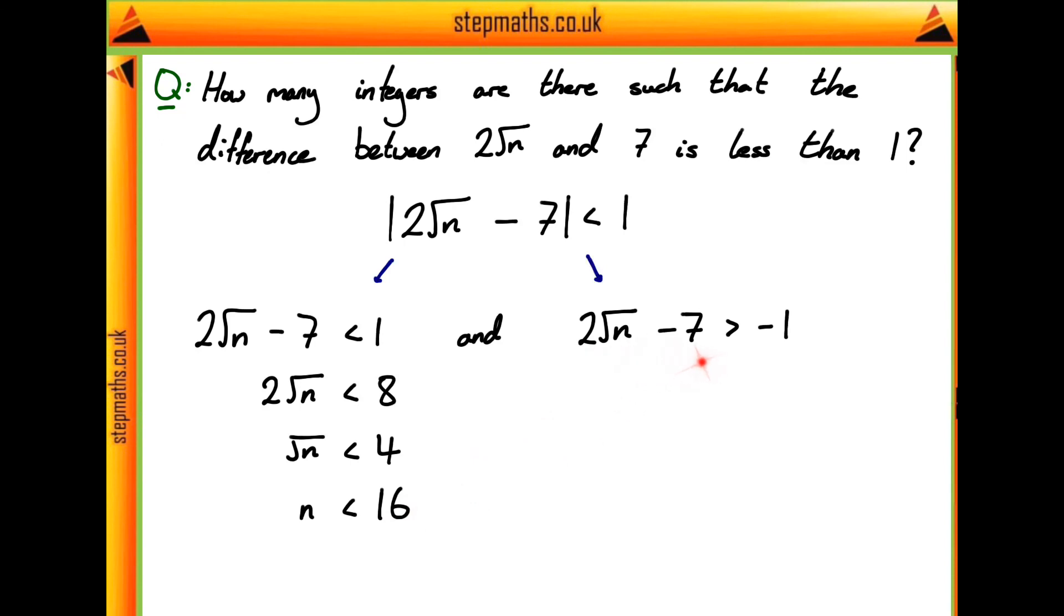Then if we go ahead and look at this other inequality, we can just add 7 to both sides again, divide by 2, and square both sides to get that n is going to be greater than 9.